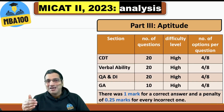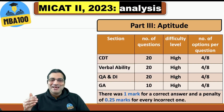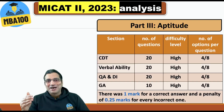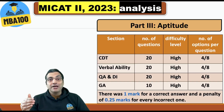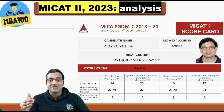The difficulty was high across all sections. One mark is awarded for a correct answer and a penalty of 0.25 marks for every incorrect response.